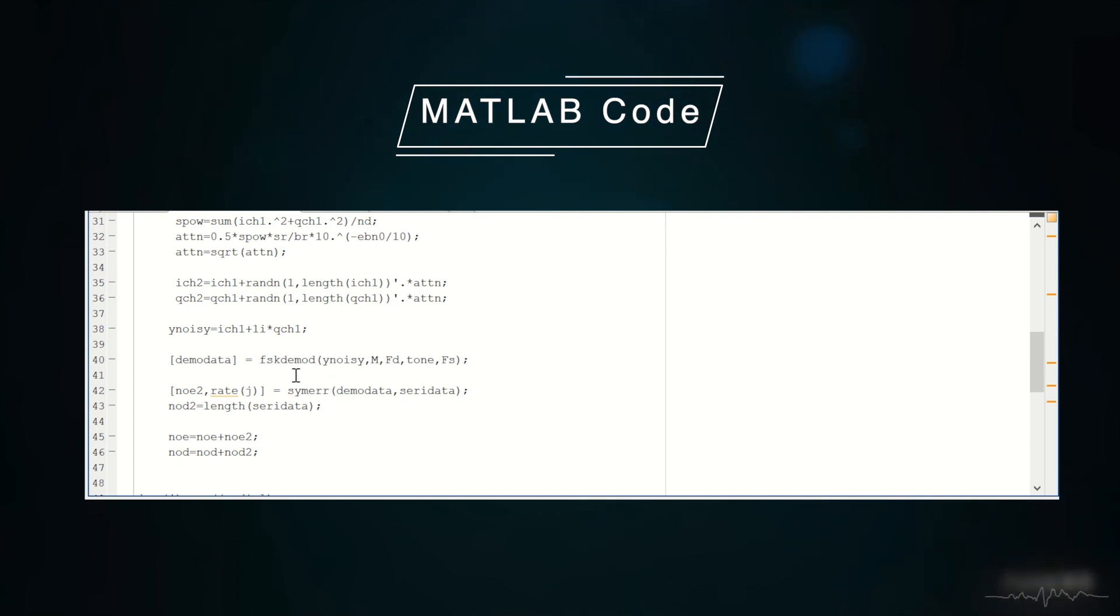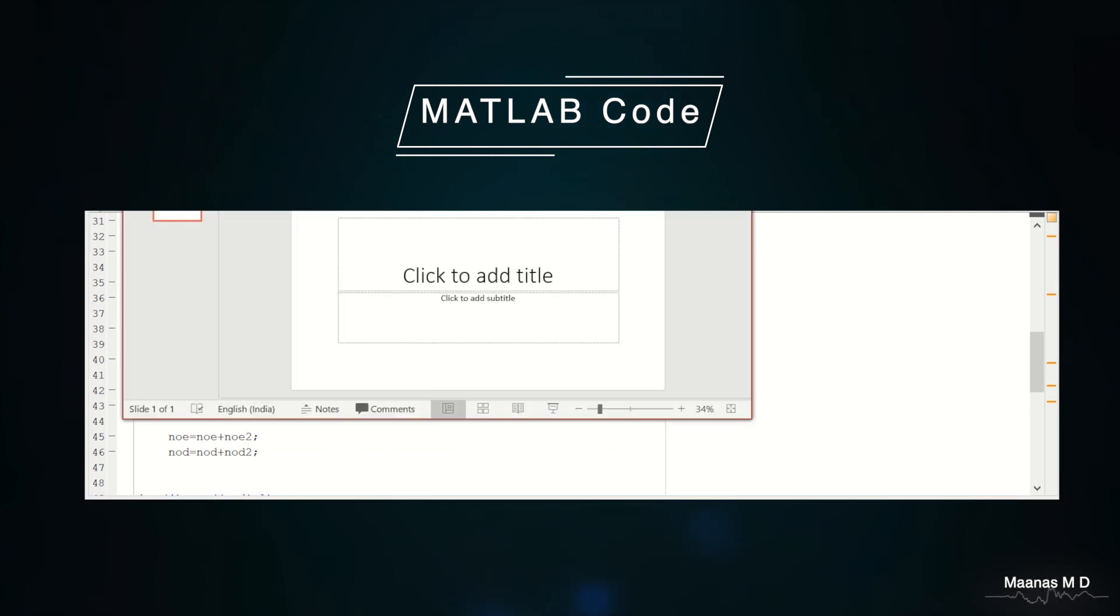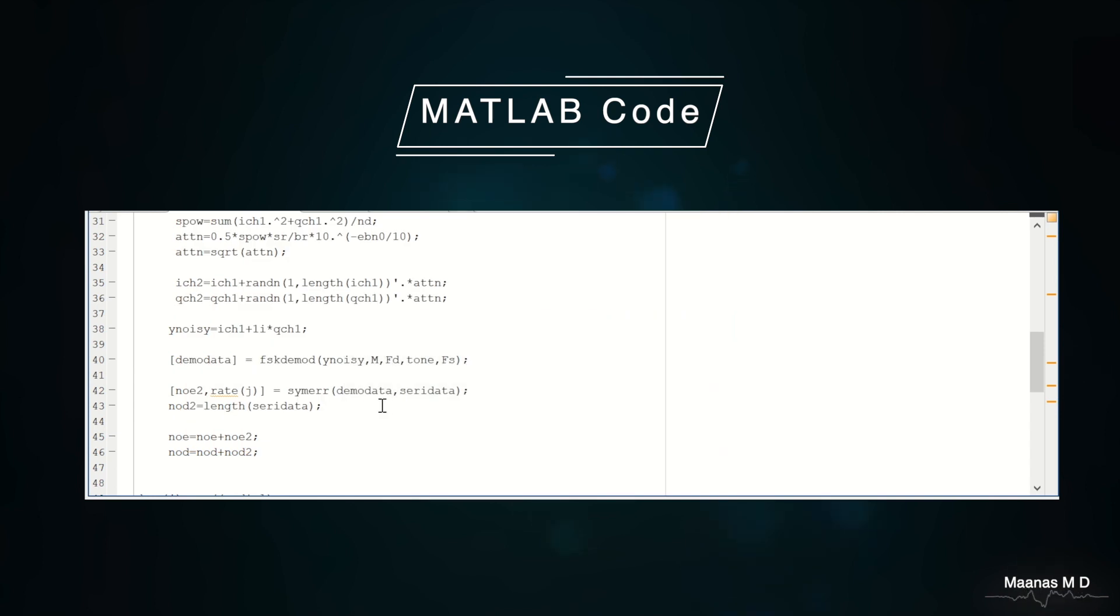The output of this is obtained as a vector demod data. Demod data consists of the bits which are demodulated. All the steps which is matched filter followed by envelope followed by sampling happens and then after the comparison we get the final bits. Now we need to find the error.